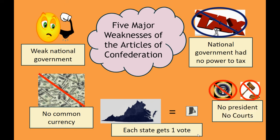The last weakness is that there was no president and no courts. Remember, they're trying to be the opposite of King George III. So with these five weaknesses, they pretty much accomplished that — they became the opposite of what they had under King George III. The national government is very weak. There's no power to tax — remember how much they hated taxes under King George III. There's no common currency. Each state gets one vote, so the national government isn't favoring one big state over the small states. And finally, there's no president — nobody like King George III to be in charge of everybody.